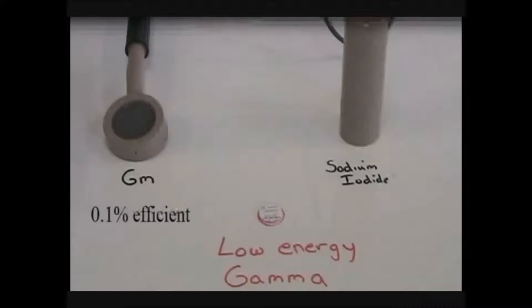For this source, that is a 0.1% efficiency for the GM and a 3.5% efficiency for the sodium iodide detector.